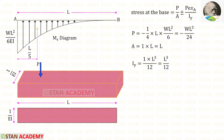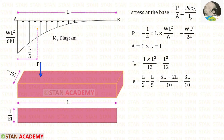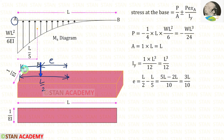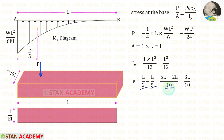Now let us find the cross-sectional area of the analogous column, which is 1 into L. The moment of inertia IY is equal to L³/12. Now let us find the eccentricity e. In the analogous column the center lies at a distance of L/2 from point A. We know the load acts at L/5 from point A, so the eccentricity e = L/2 − L/5. Taking LCM of 10: 5L − 2L = 3L, giving e = 3L/10.